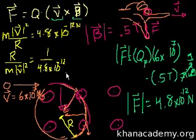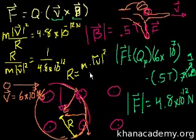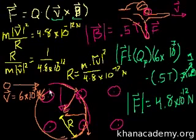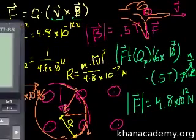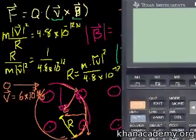And we get that the radius of this circle is going to be equal to the mass of the proton times the magnitude of its velocity squared divided by the force from the magnetic field, the centripetal force, 4.8 times 10 to the minus 12 newtons. And the radius should be in meters since everything is kind of in the standard SI units.